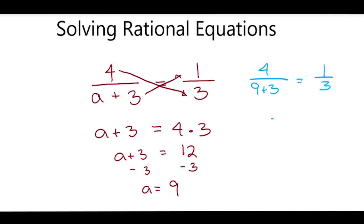9 plus 3 is 12, so that's 4 over 12 equals 1 third. If I multiply 1 third top and bottom by 4, that gives me 4 twelfths. So 4 twelfths equals 4 twelfths, and A equals 9.